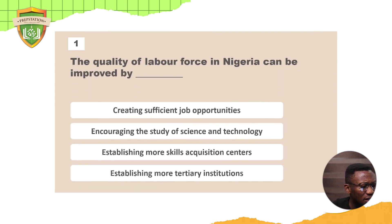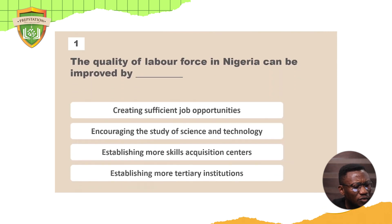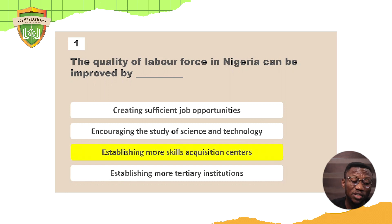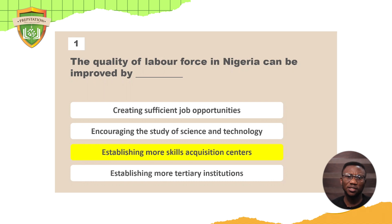Question one: the quality of labor force in Nigeria can be improved by — creating sufficient job opportunities, encouraging the study of science and technology, establishing more skills acquisition centers, or establishing more tertiary institutions? The answer is establishing more skills acquisition centers. When you train more people and educate them, they tend to get jobs because education is the key to employment.